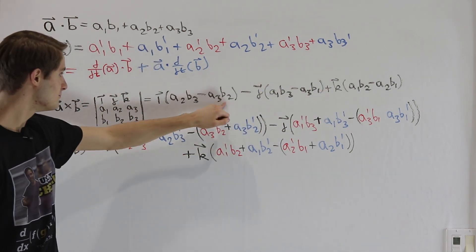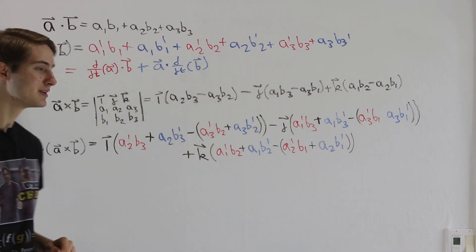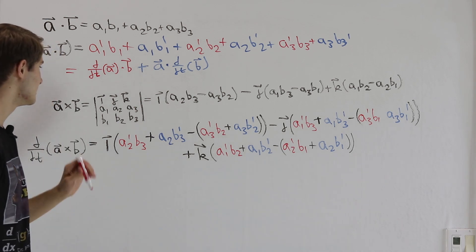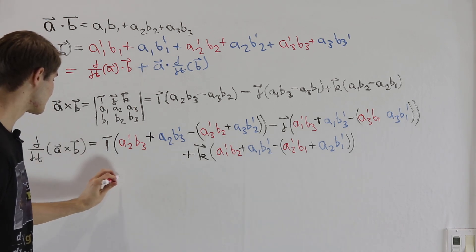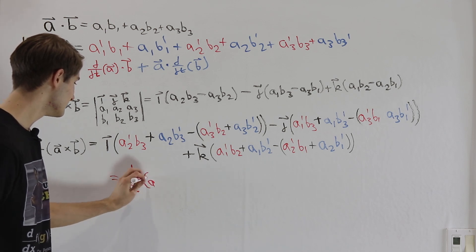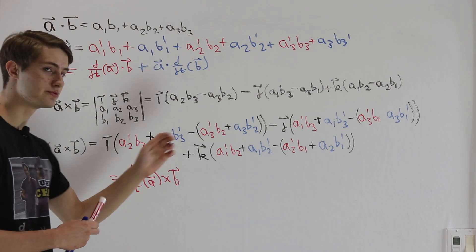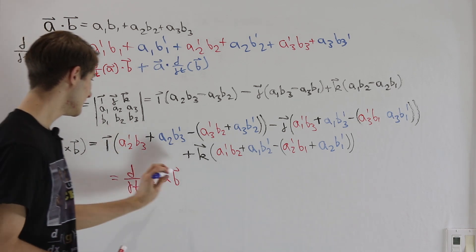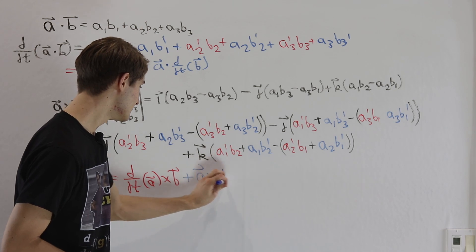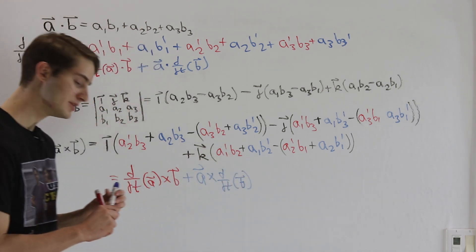The blue components are going from B to B' throughout. So we can do the exact same thing that we did in the dot product in this situation where we're looking at a cross product. This is going to equal the derivative with respect to T of A crossed with B — that's going to be all of those red components put together — and then we add A crossed with the derivative with respect to T of B.